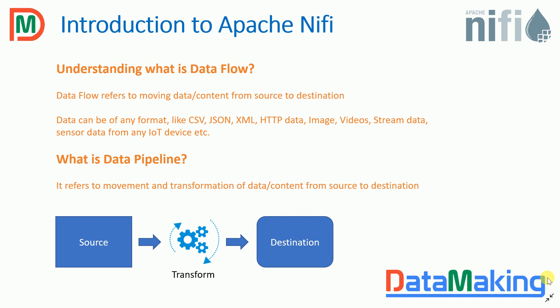Data can be of any format. In the modern digital world, we are living in the data world. Data can be a flat file — either CSV, JSON, or XML. It can be data generated from any REST API using HTTP protocol, or it can be images and video. It can also be data coming from sensors, which is part of IoT devices. When data moves from one source to a destination, it becomes a data flow.